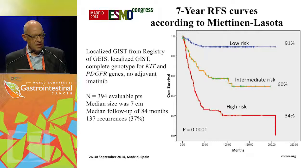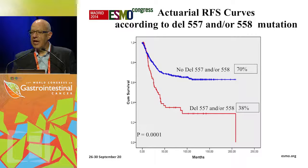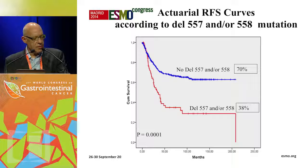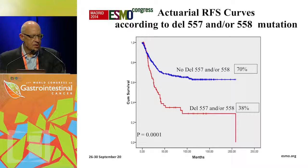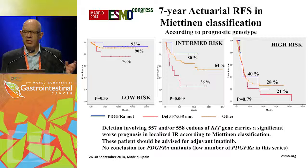But when you look at the actual mutations in carefully typed patients — specifically the deletion of codons 557 or 558 in exon 11, which is probably the commonest deletion seen in the exon 11 group — patients with that deletion had a much worse outcome. So prognostically, this deletion appears to be important.